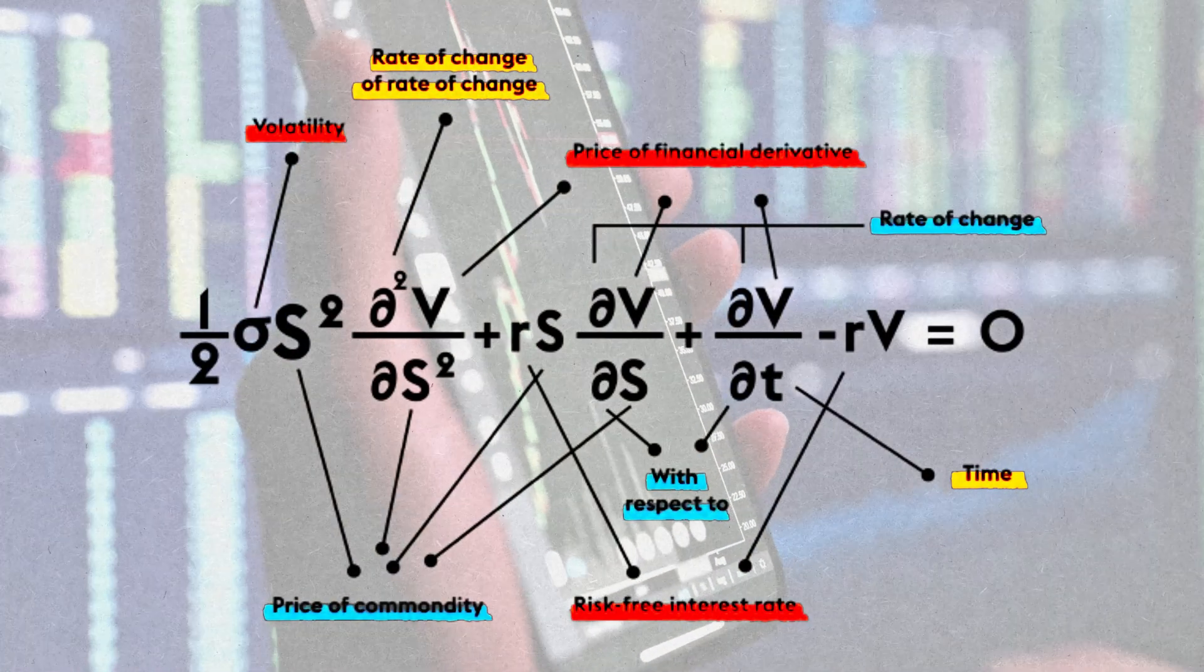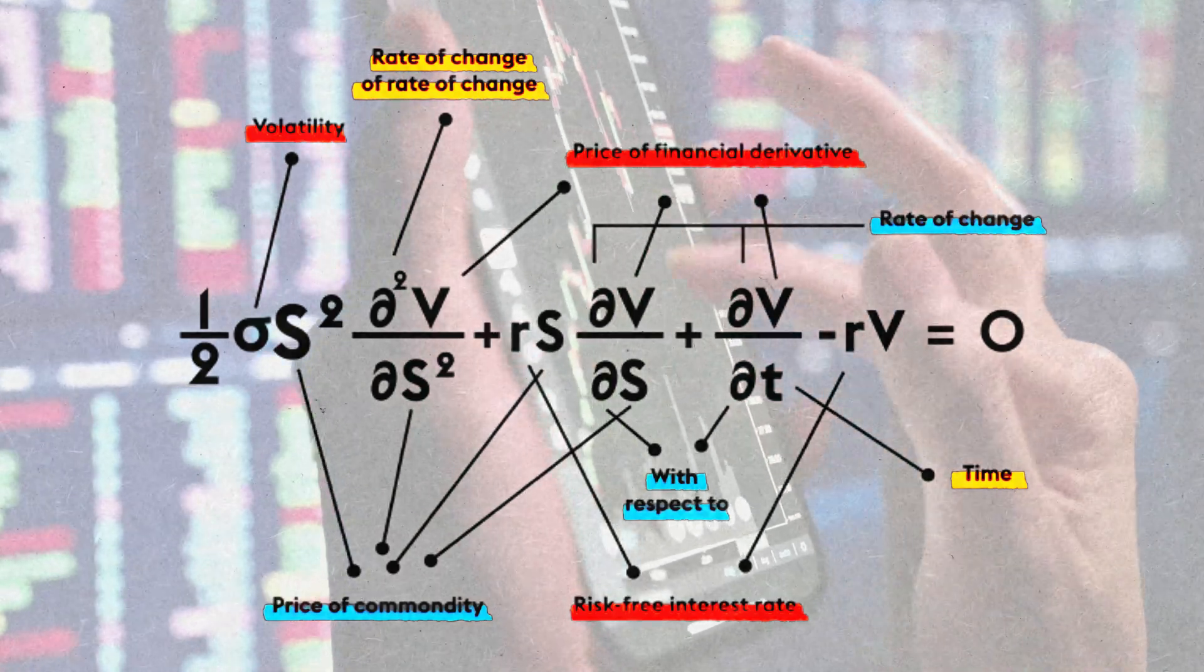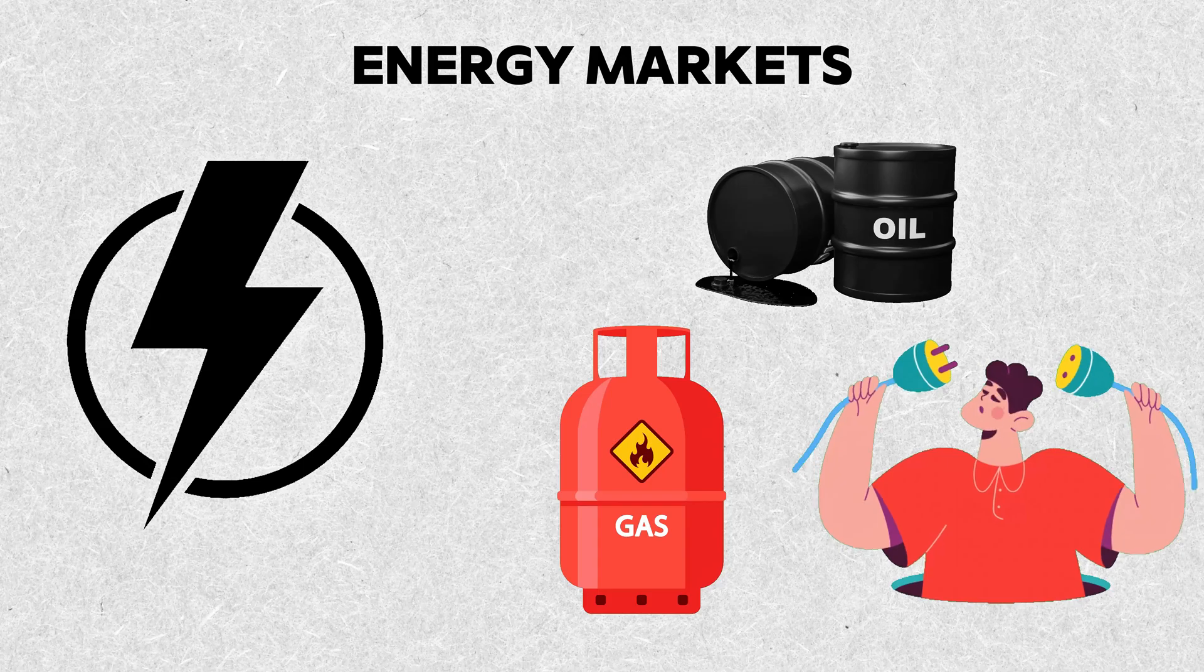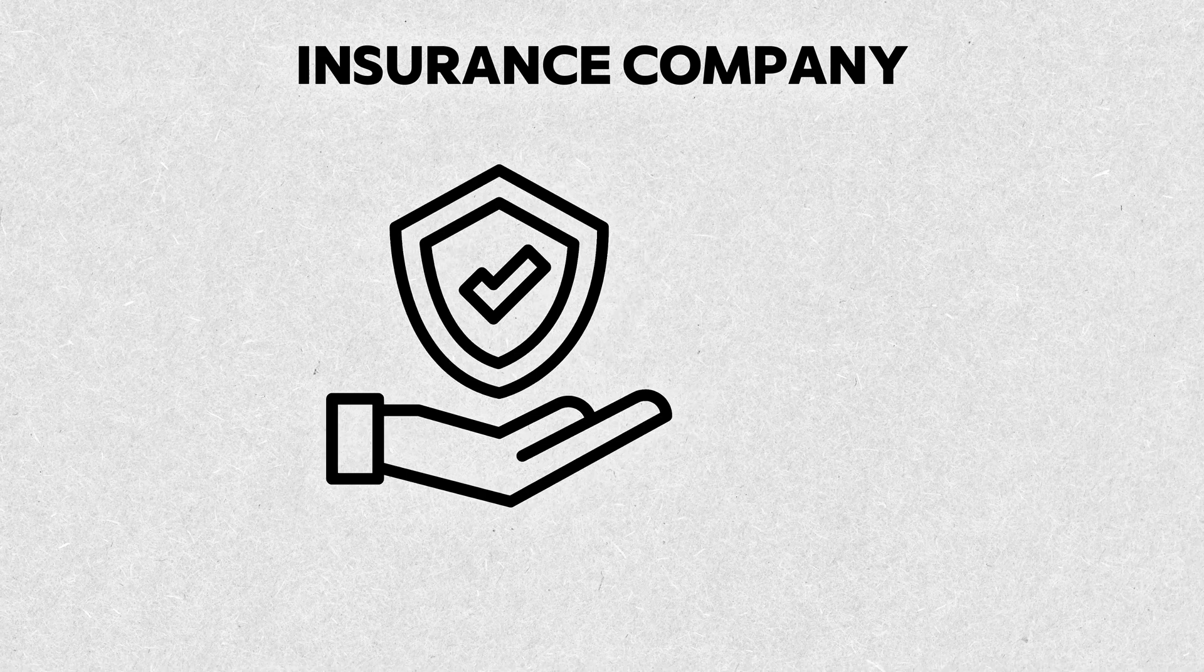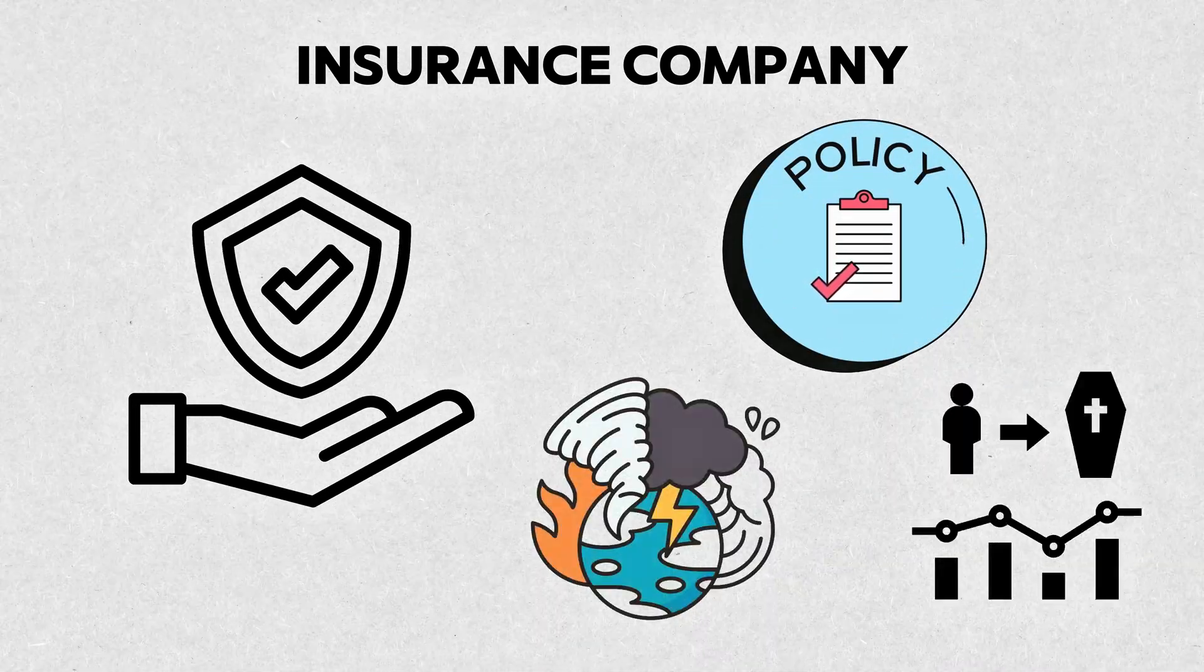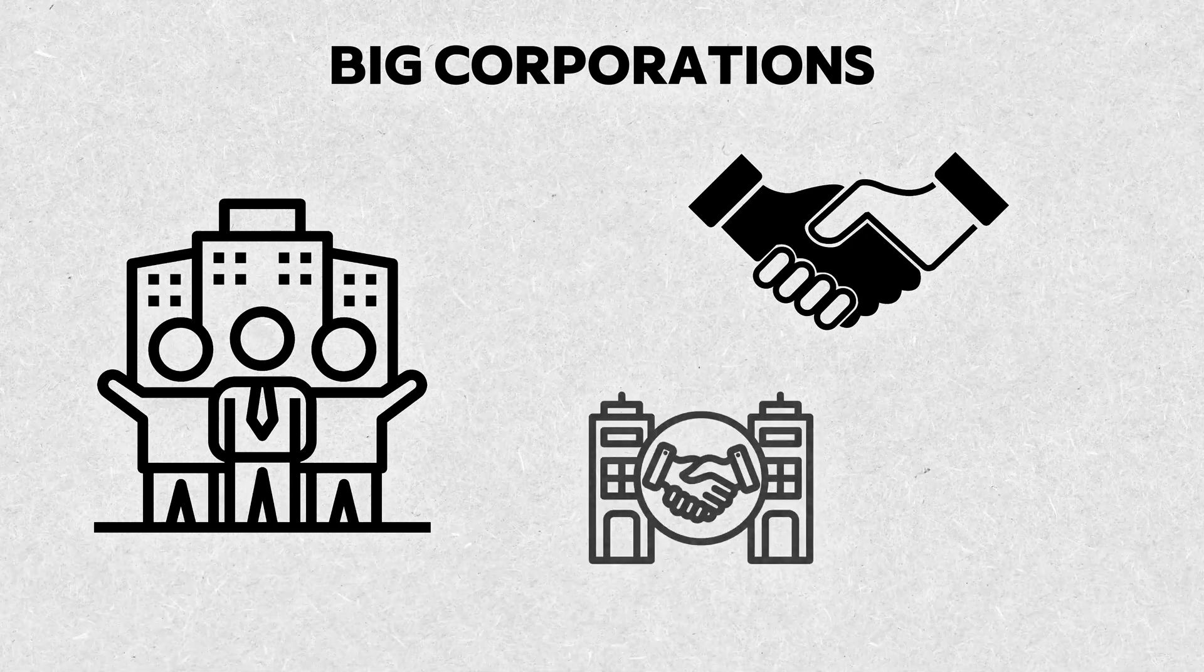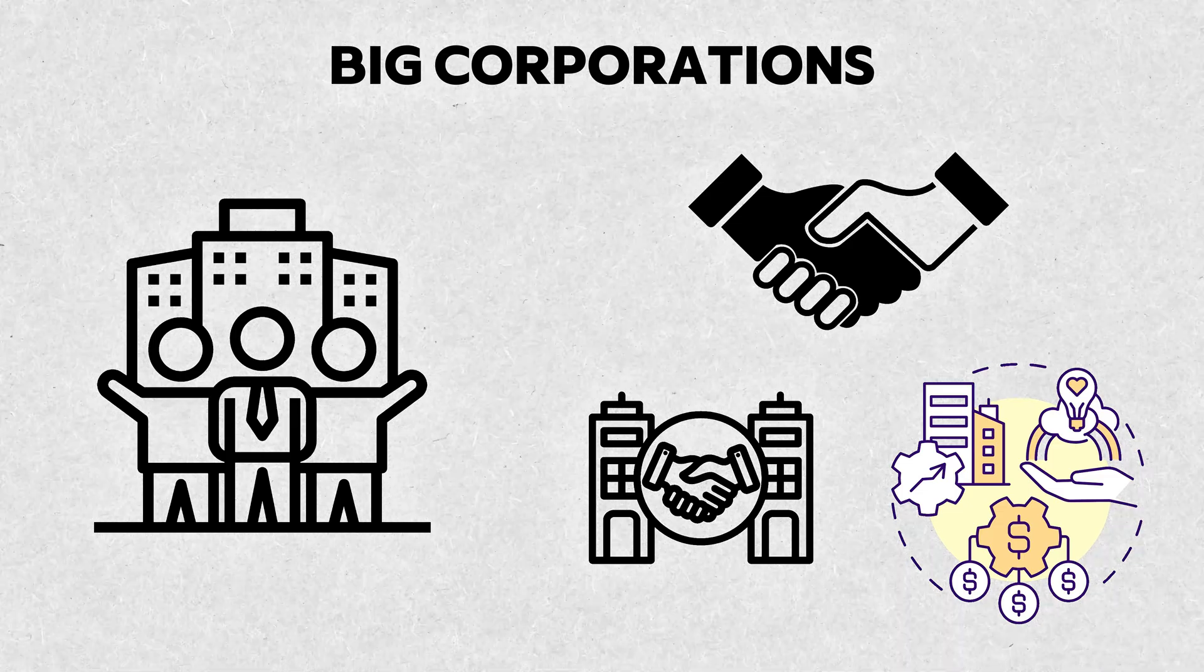But the Black-Scholes model's applications go far beyond just options, influencing nearly every aspect of modern finance. In energy markets, it helps accurately value options on commodities like oil, natural gas, and electricity by considering factors specific to those assets. Insurance companies adapt the model to price policies and hedge against risks like natural disasters or changing mortality rates. Even big corporations use Black-Scholes principles to evaluate strategic investments, mergers and acquisitions, resource allocation, and other high-stakes decisions involving flexibility and uncertainty.